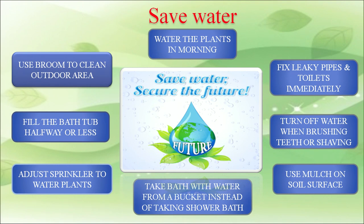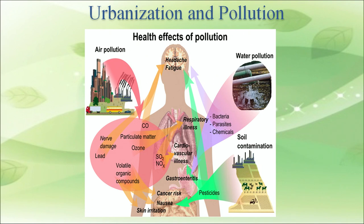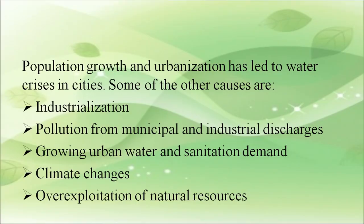Water can be saved by fixing leaky pipes and toilets immediately, turning off water when brushing teeth or shaving, using mulches on soil surface, taking a bath with water from a bucket instead of a shower, using sprinklers to water plants, filling the bathtub halfway or less, using a broom to clean outdoor areas, and watering plants in the morning. Pollution causes various ill effects on human health, and population growth and urbanization have led to water crisis in cities.